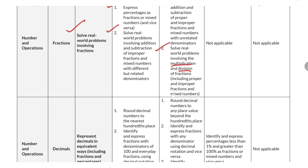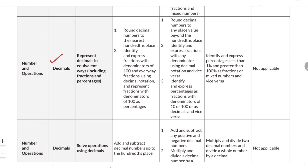The next subtopic is decimal numbers. You need to represent decimal numbers in equivalent ways — either as fractions or percentages. Topics include: rounding decimal numbers to the nearest hundredths place; identifying and expressing fractions with denominator 100 and everyday fractions using decimal notation; representing fractions with denominator 100 as percentages; rounding to any place value beyond the hundredths; expressing fractions with any denominator using decimal notation; and converting between percentages, fractions, and decimals, including percentages less than 1% and greater than 100%.